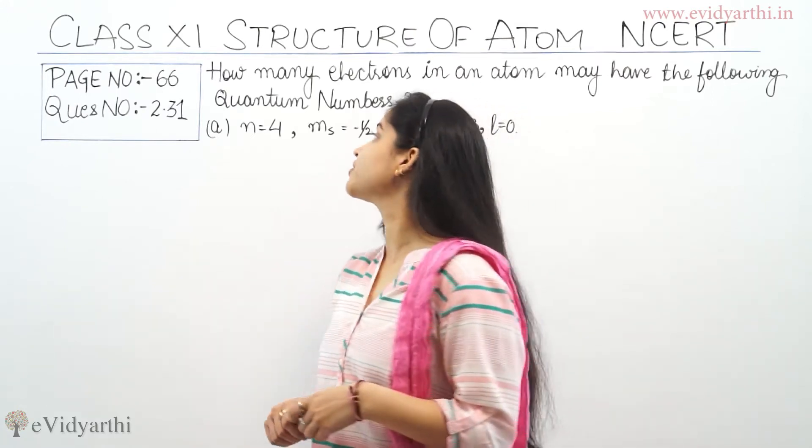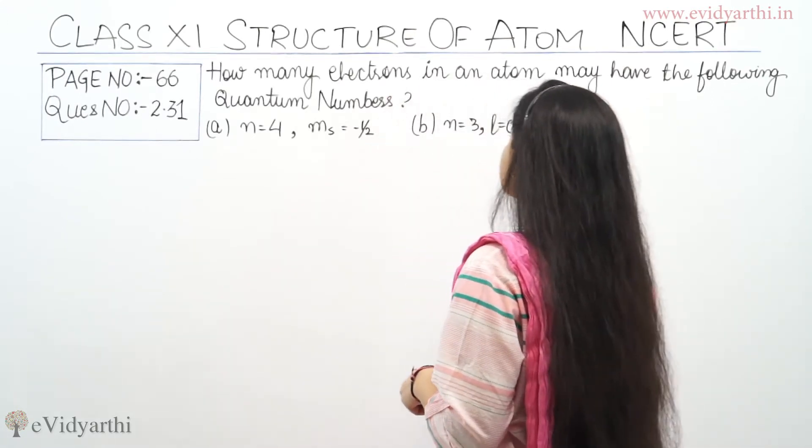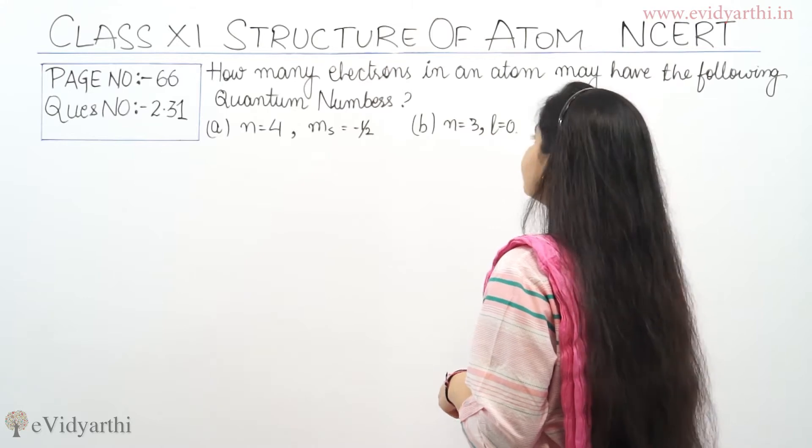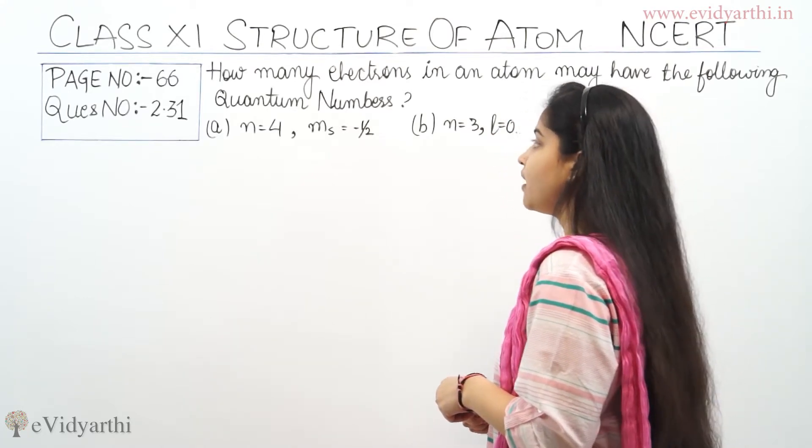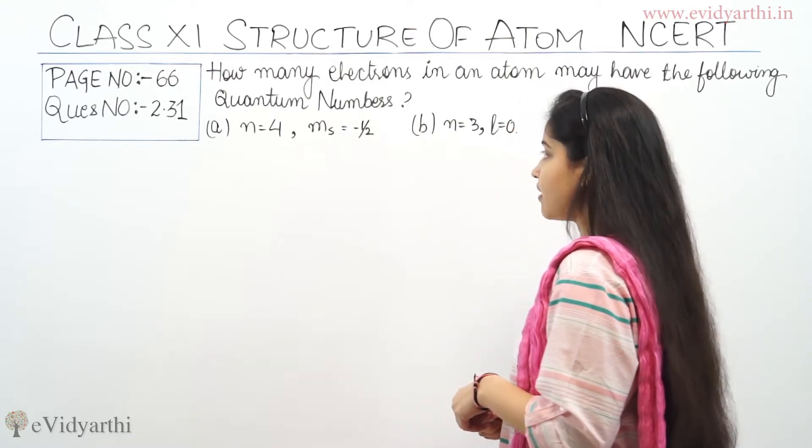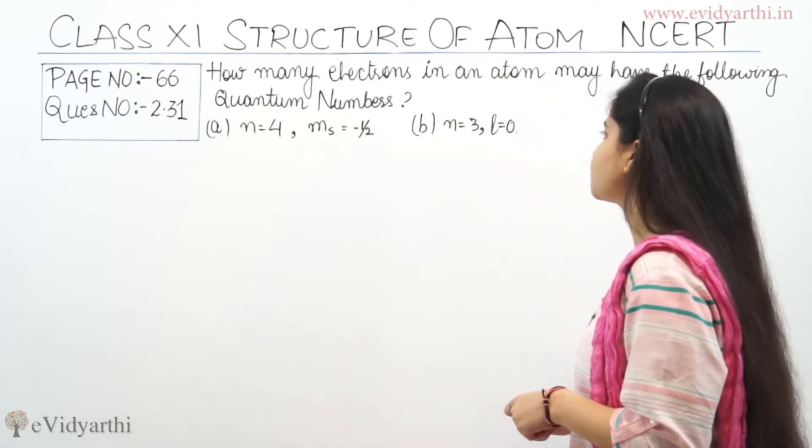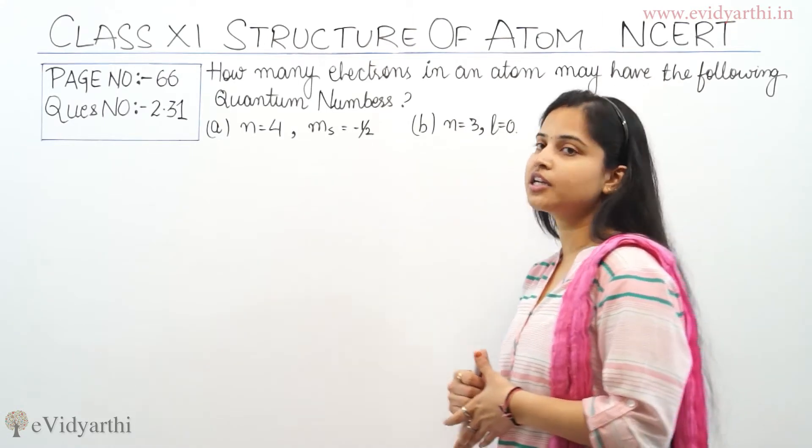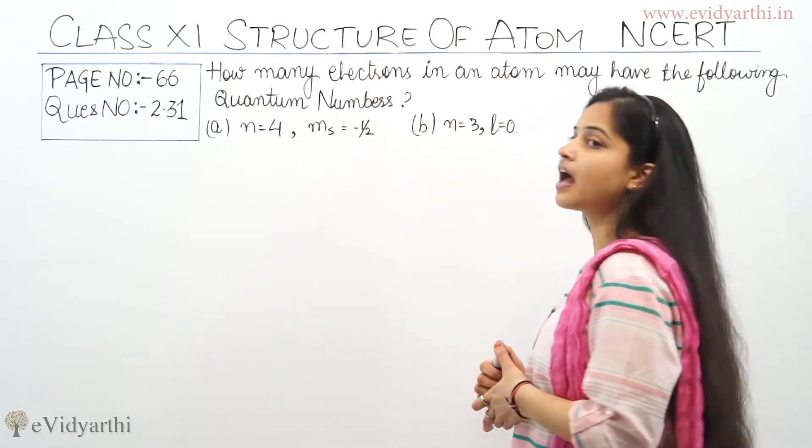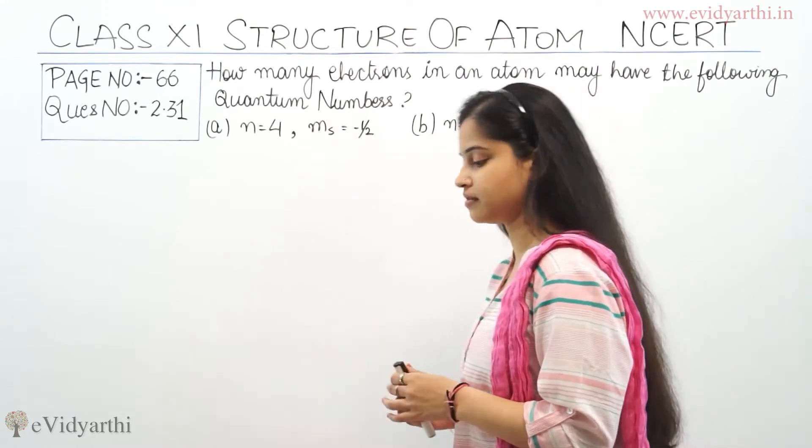Let's begin with the question first. Question is, how many electrons in an atom may have the following quantum numbers? Part A: n is equals to 4, ms is equals to minus 1/2. Part B: n is equals to 3 and l is equals to 0. So we need to find out how many electrons are there in an atom which are having the following quantum numbers.